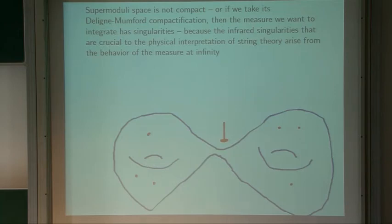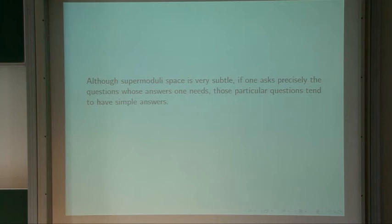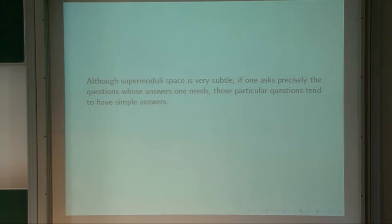The behavior at the singularities is physically sensible because the singularities that the superstring measure has at a degeneration are very similar to the singularities of a Feynman propagator resulting from integrating over the Schwinger parameter. The moduli space of super-Riemann surfaces is very subtle, but if you ask precisely the questions whose answer you need, those particular questions tend to have simple answers. If you ask a question whose answer you didn't need, you're in for a world of pain — those questions don't have simple answers.